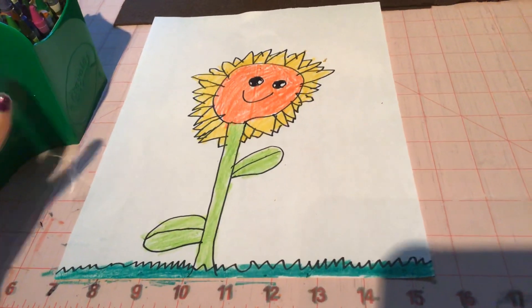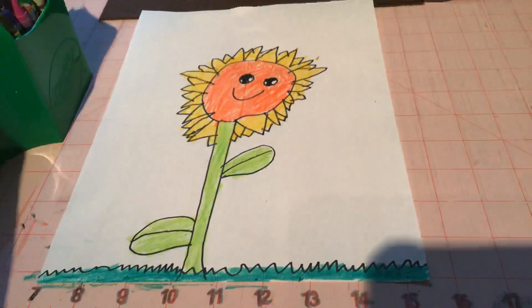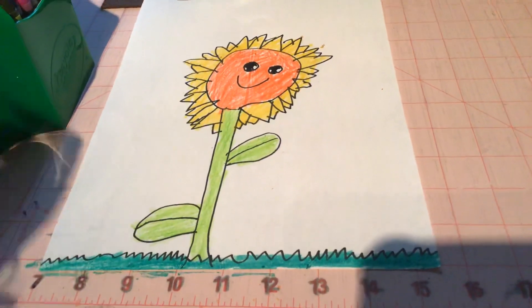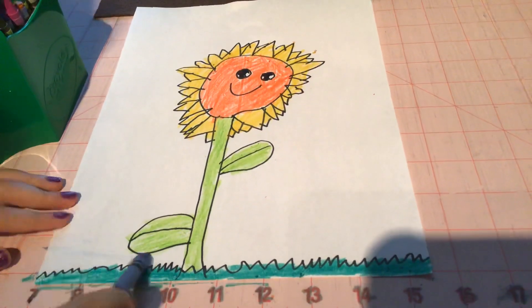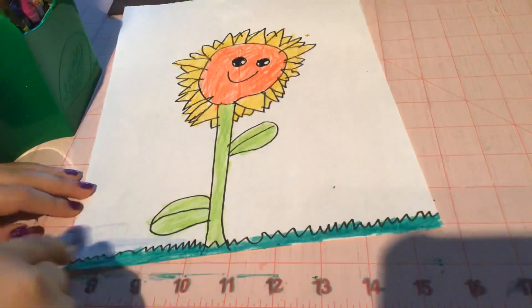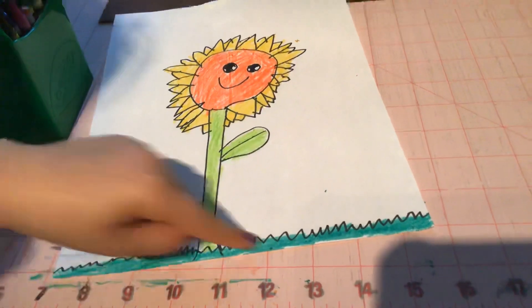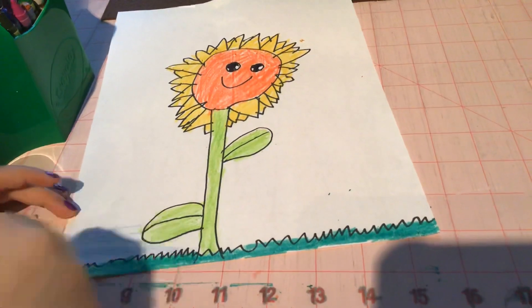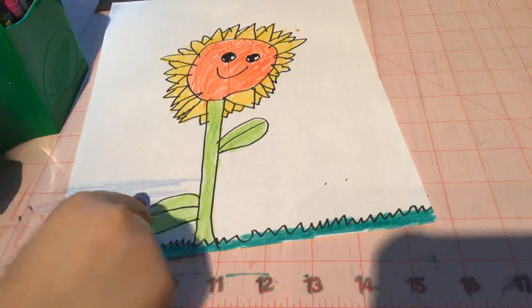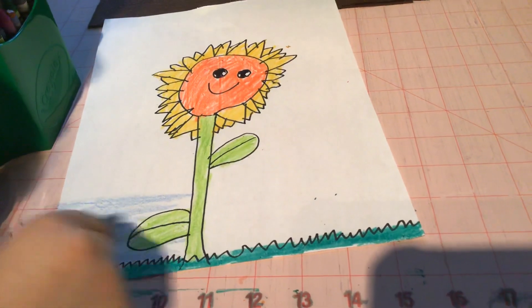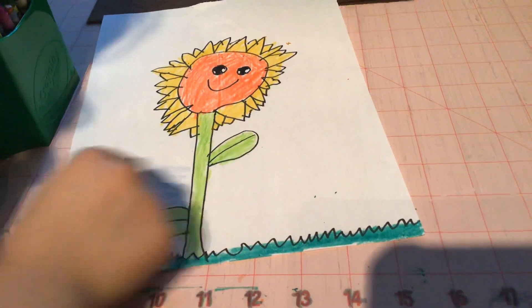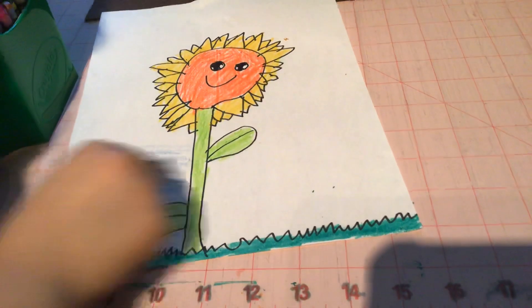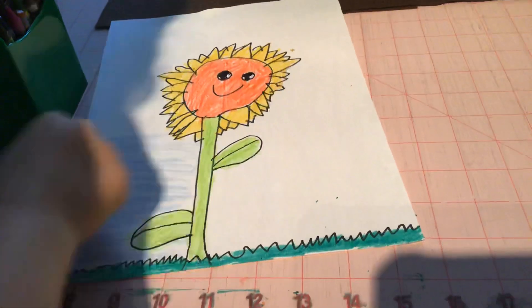And if we want to do a background, we can make like other sunflowers or just make it blue like the sky. I'm just going to make it blue for the sky. You can add sunflowers on the back like other sunflowers. But I'm going to color my background as blue. You don't have to do a background, but I just want to do like a blue sky background.